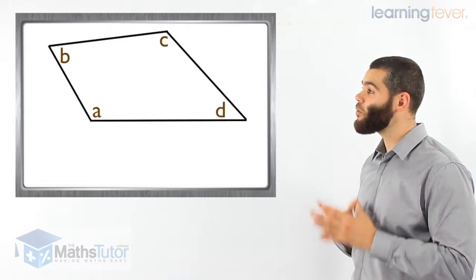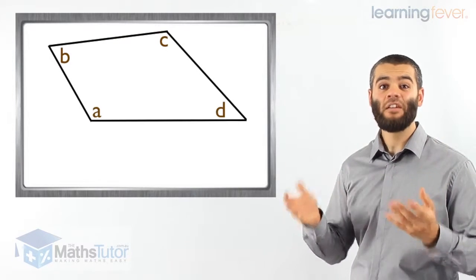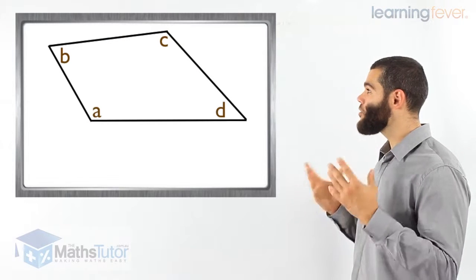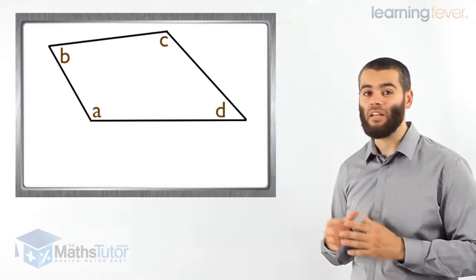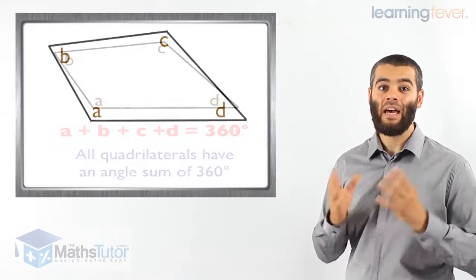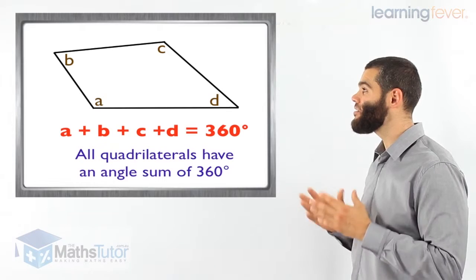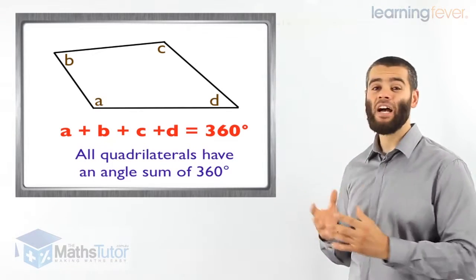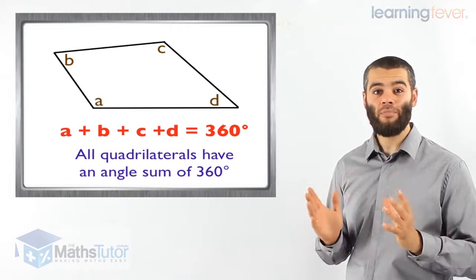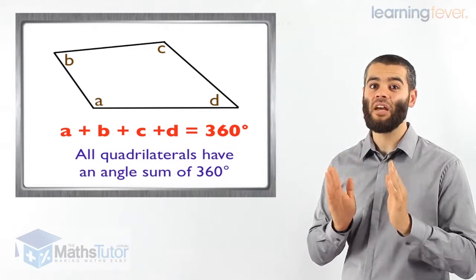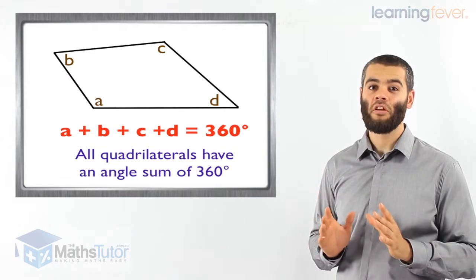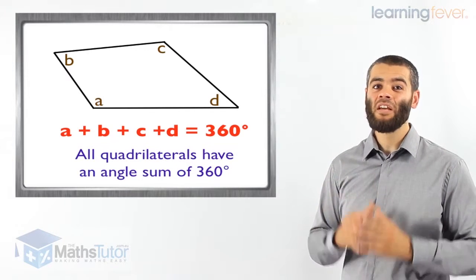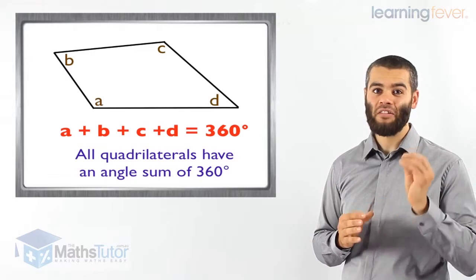We can see that this is a quadrilateral. It has four sides, which means it also has four angles — the angles marked A, B, C, and D. All four angles add up to 360 degrees. So the angle sum of a quadrilateral is 360 degrees, no matter what shape or size. If it's a four-sided figure with four angles, you know straight away it's a quadrilateral and the angles will always add up to 360 degrees. Let's do some examples now and understand the concept even better.